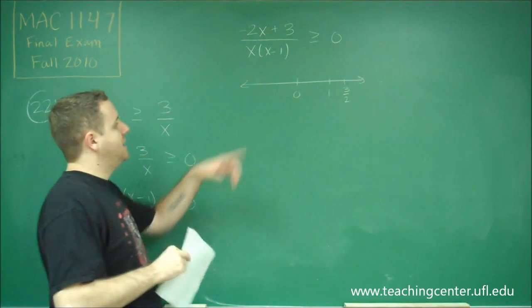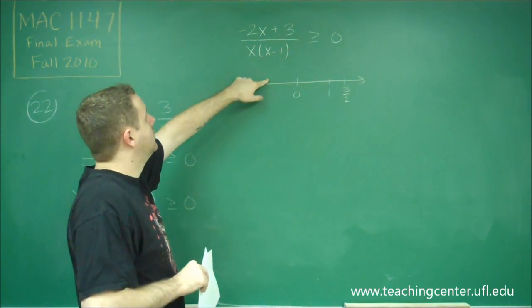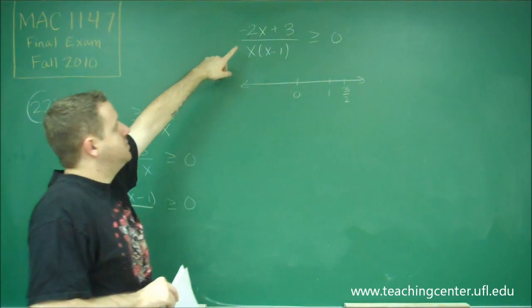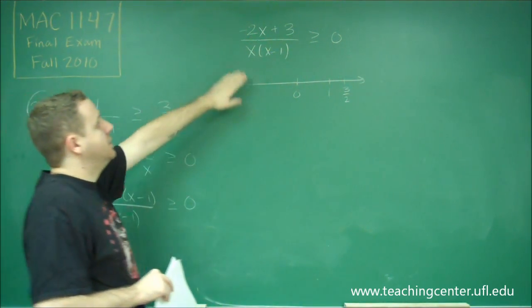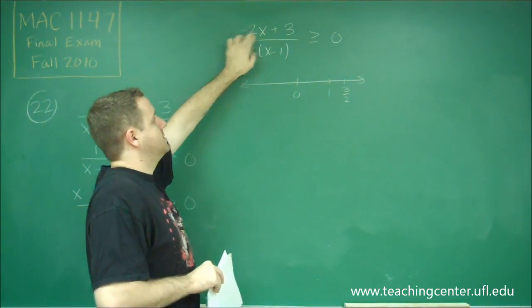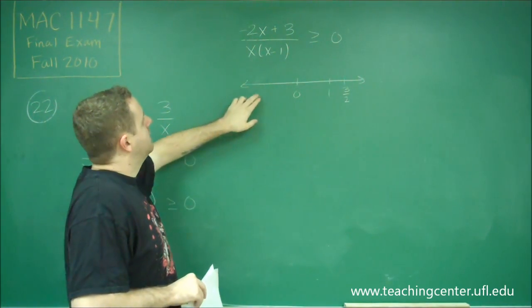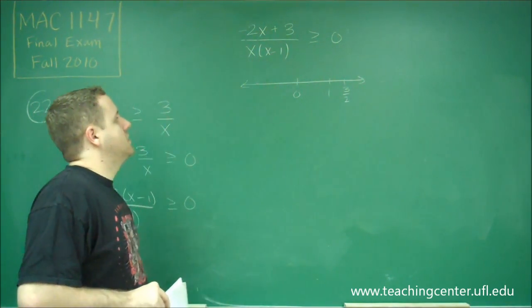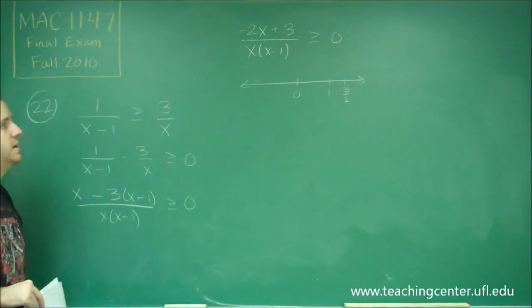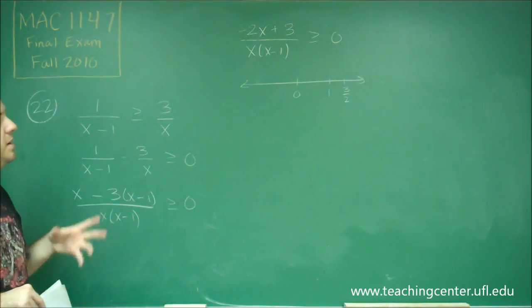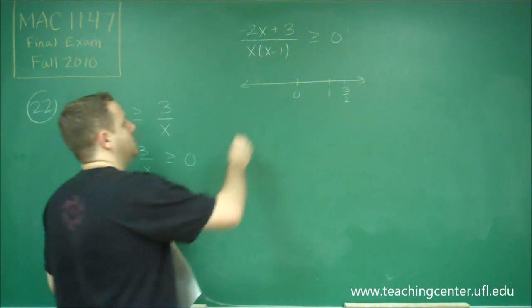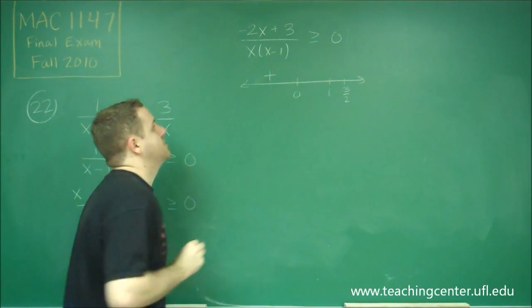If we plug in a negative number for x, the top here is going to be positive because negative times negative gives us positive, plus 3 is positive. Both of these numbers on the bottom are going to be negative, so we have negative times negative on the bottom, which would be positive. So everything here is going to be positive, and that's what we want.